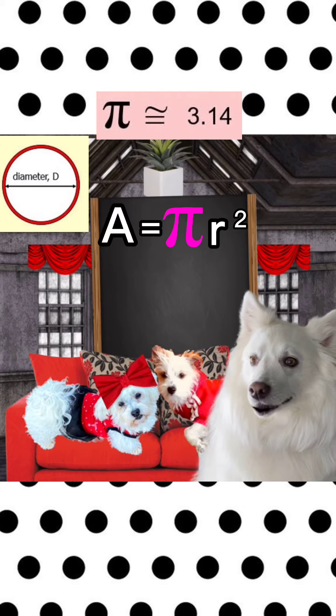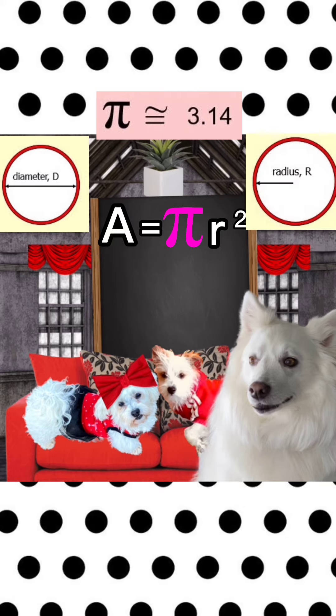Exactly, Dexter. Now, the radius is halfway through the circle, so it's from the edge of the circle to the very center of the circle.